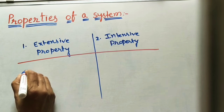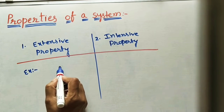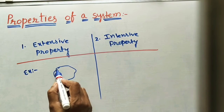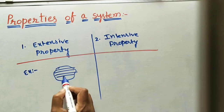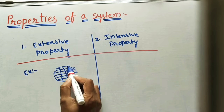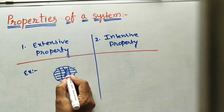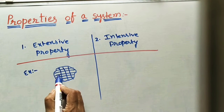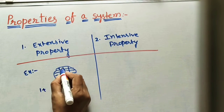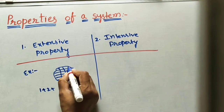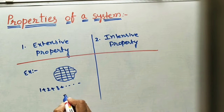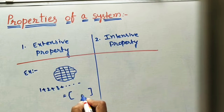Let us take one example. Here I am taking one system, and I am dividing it into some parts — one, two, three, four, five, six, seven — like that. If you are taking the property of the first part, the property of the second one, the property of the third one, and so on, adding all the properties of all the parts will give the sum of the system property.